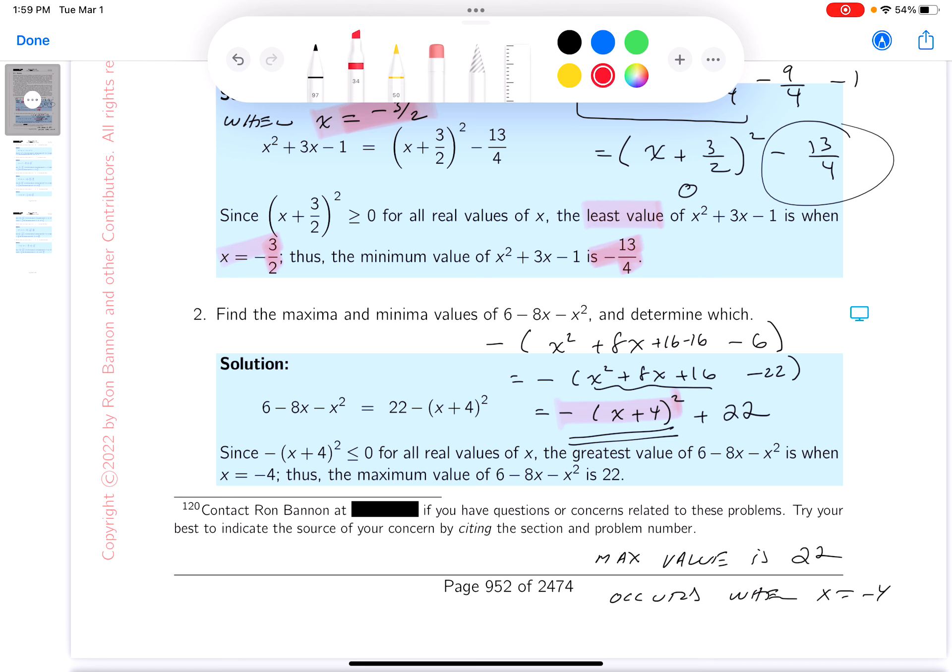Let's look at the key. See what they say. They go over here and say the greatest value occurs when x equals minus 4 and is 22. Just like we said. Thank you.